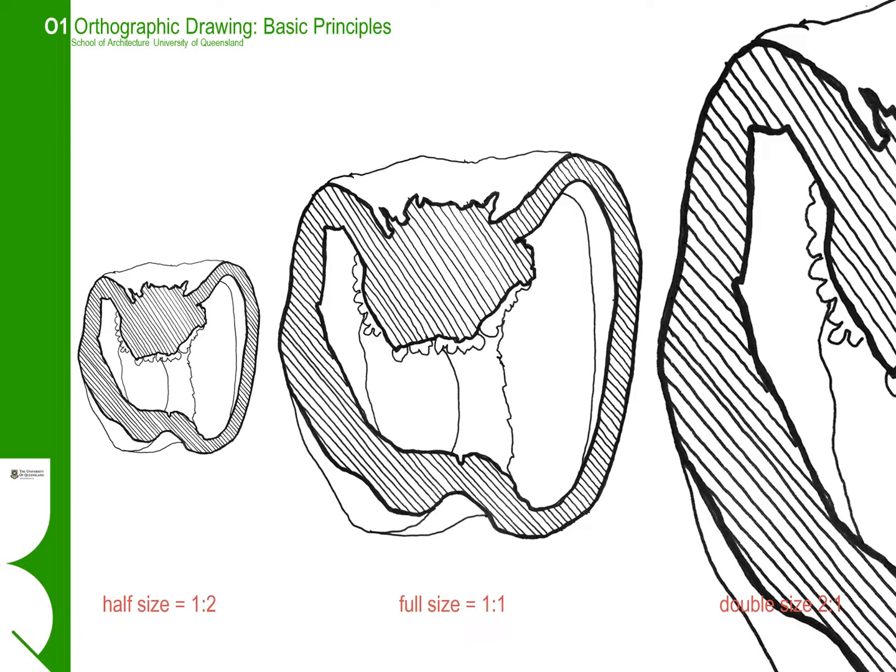On the left-hand side you can see a smaller rendition of the drawing which is half the size of the capsicum, so it's a scale of one-to-two — one millimetre on the drawing equals two millimetres in real life. On the far right-hand side you can see the other end of the spectrum, where we have increased the scale so that it's double the size of the capsicum, and therefore two millimetres on the drawing equals one millimetre of the capsicum.